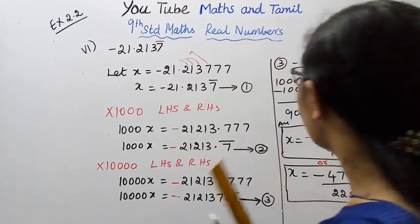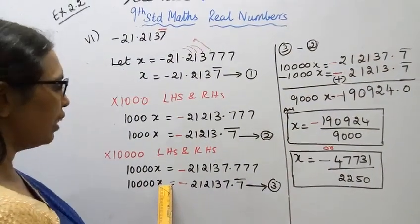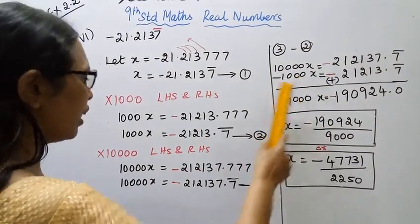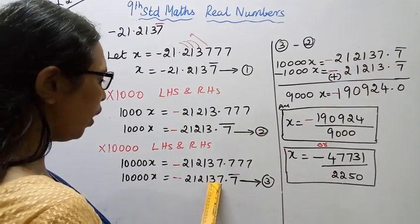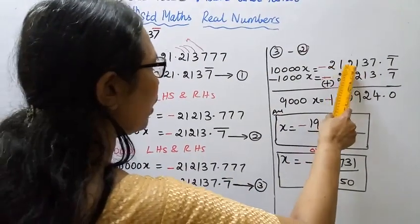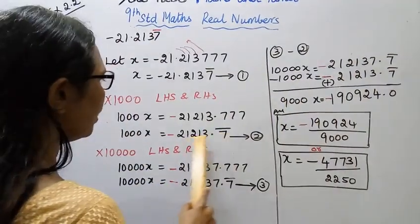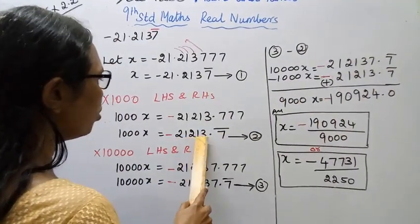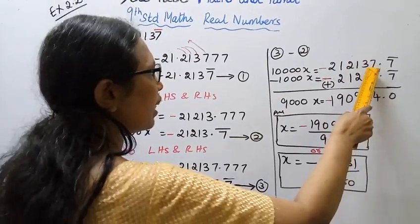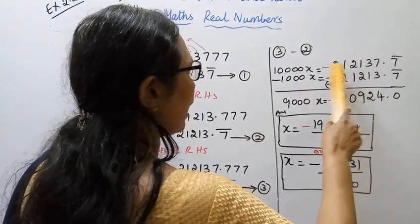Now, 3 minus 2. Equation 3 is 10,000x. Equation 2 is 1000x. 10,000x minus 1000x. The 7 bar cancels on both sides. Then: once 10, 100, 1000, 10,000 — all right. Correct.